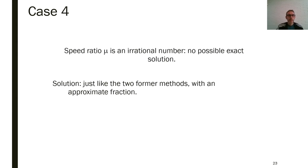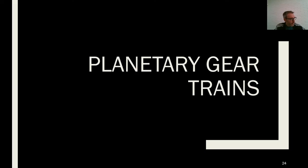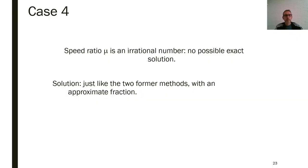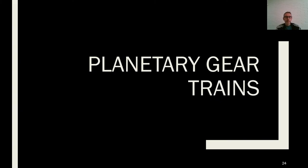When you have an irrational number, there is no exact solution and you have to use an approximation. For example, if you want to approximate pi, you would use 3.14 or more decimal places depending on your application's required accuracy. That's all for ordinary trains — let's go on with planetary gear trains.